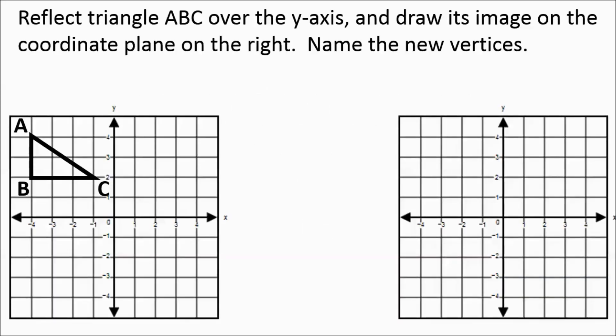We have a picture of a triangle, and it says to reflect triangle ABC over the y-axis and draw its image on the coordinate plane on the right. Name the new vertices. Vertices is plural for vertex, which is a fancy word for corner. They give you A, B, C — those are the vertices — and they want you to tell the new location of those vertices. We're reflecting over the y-axis.